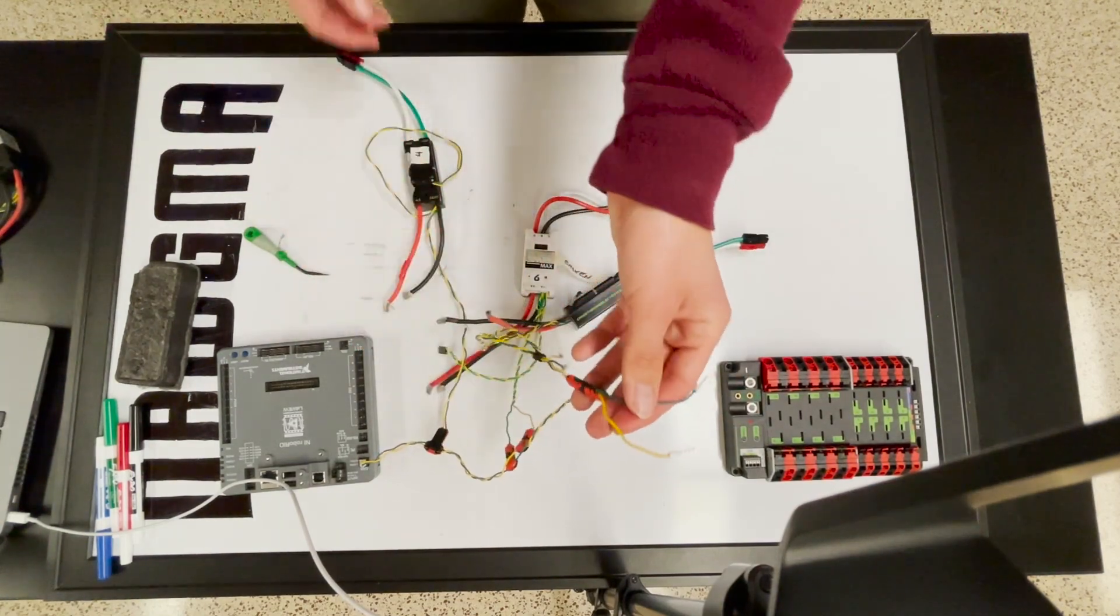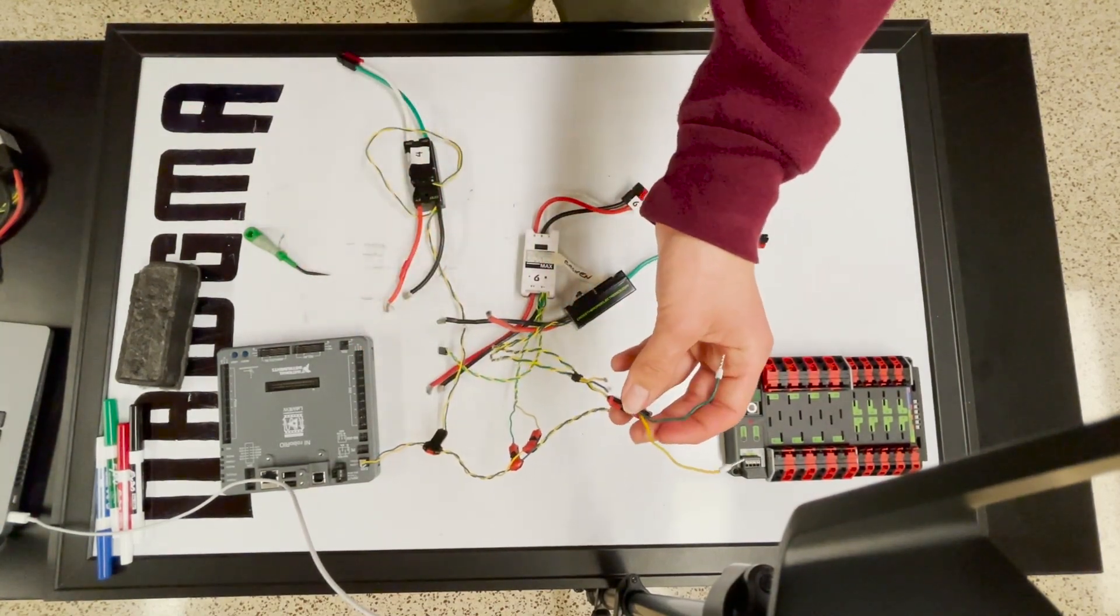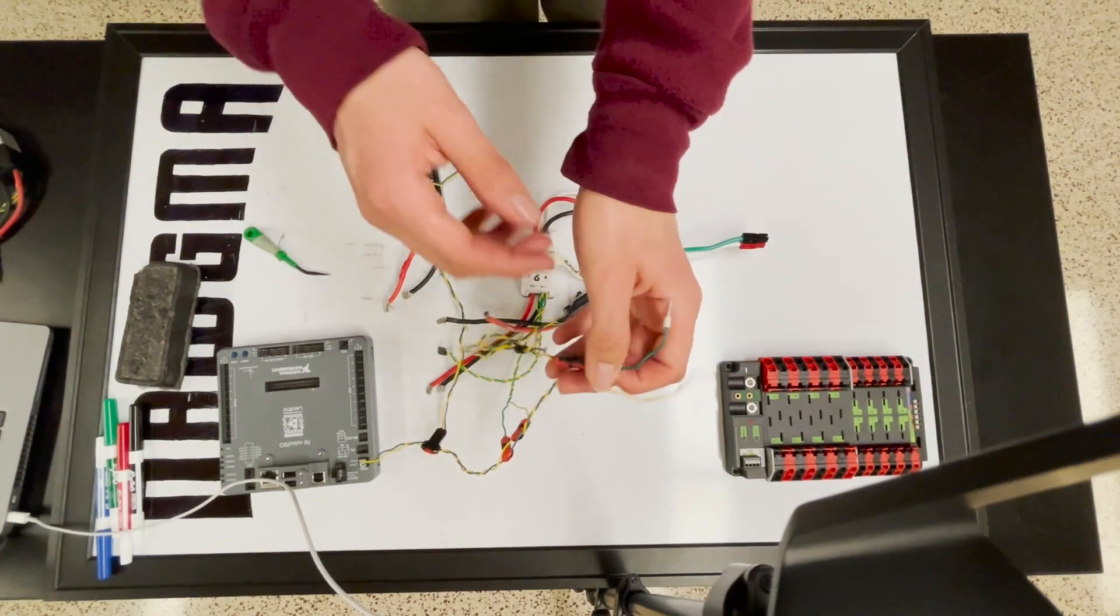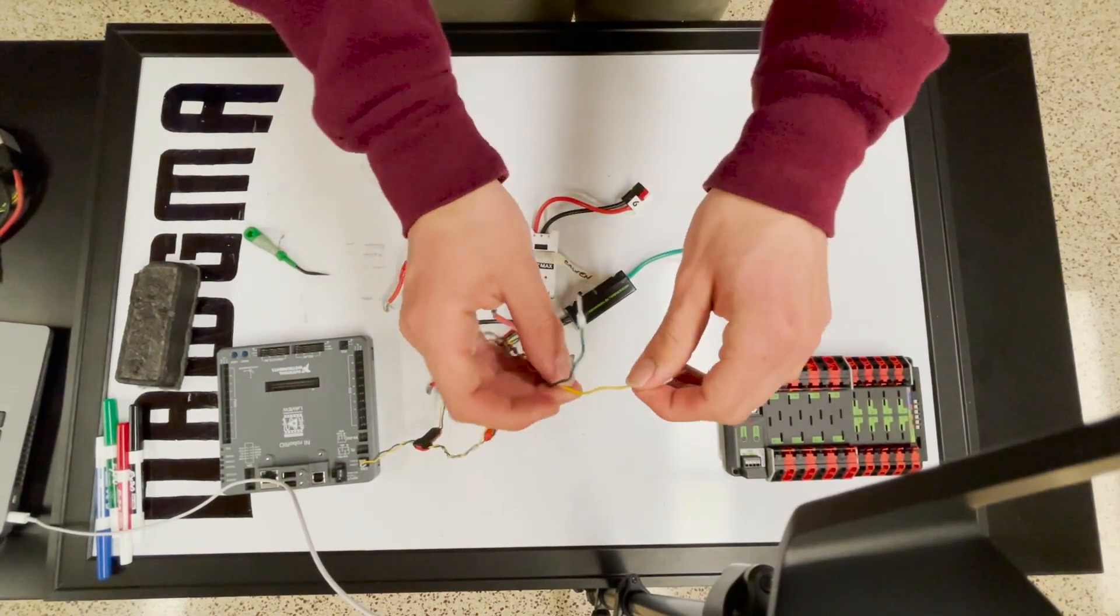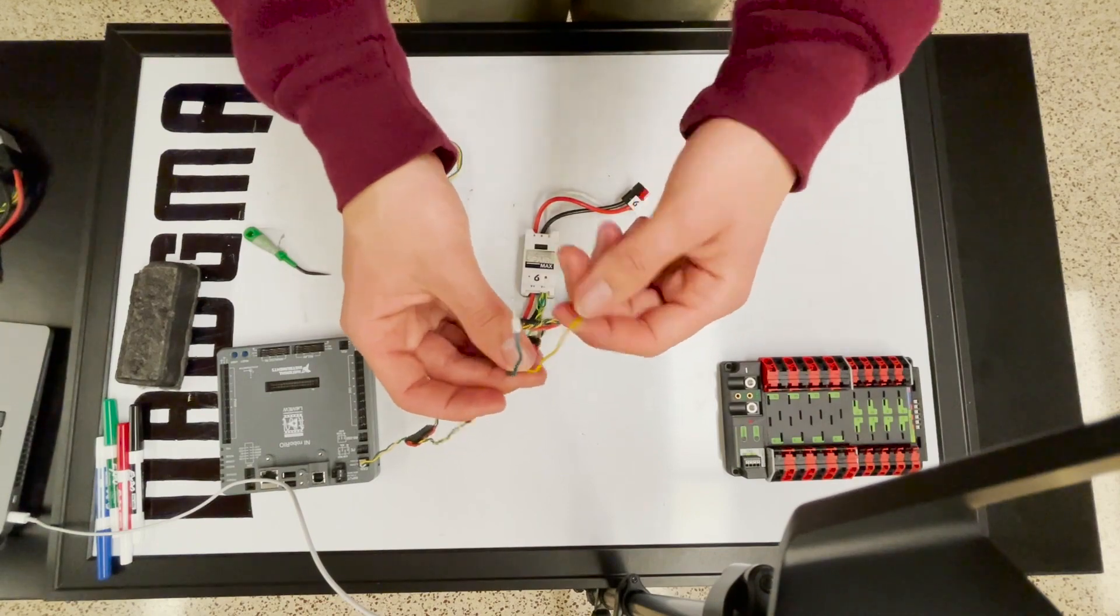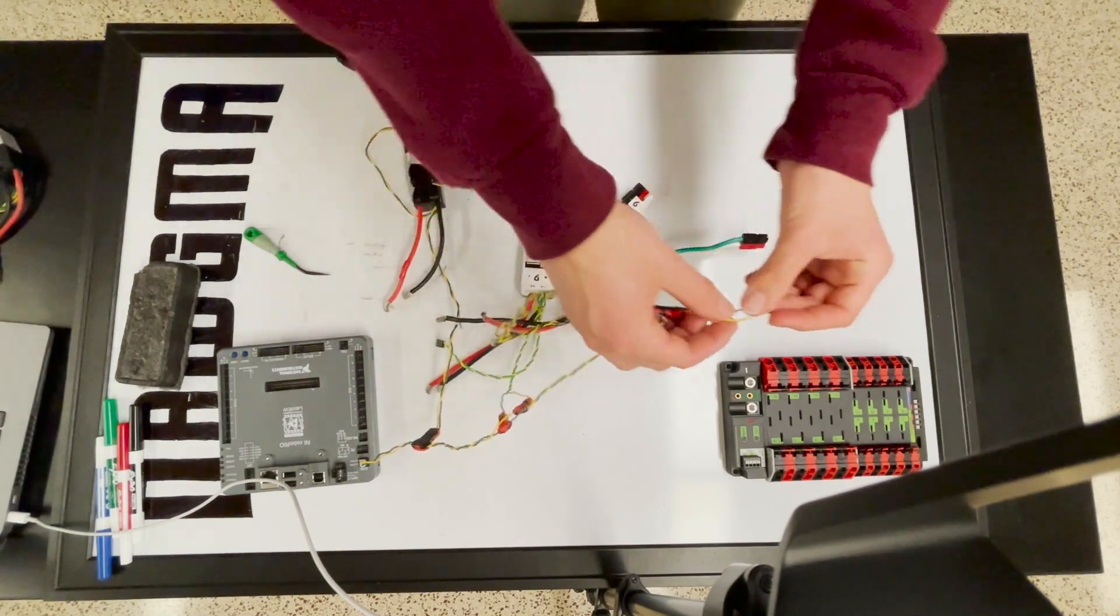Fun mnemonic device to remember these is that the green wire is green like the grass on the ground, therefore it's low. And the yellow wire is yellow like the sun in the sky, meaning it's high. So that's kind of fun.